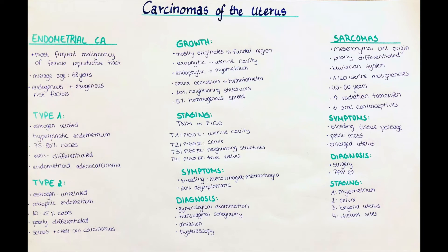Endometrial carcinomas can be staged using either the classical TNM staging — where T stands for tumor growth, N for lymph node involvement, and M for metastasis — or the FIGO staging from the International Federation of Gynecology and Obstetrics. The FIGO classification is mostly congruent with the T part of TNM, as both describe the depth of tissue involvement at the primary site.